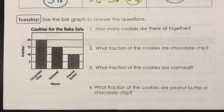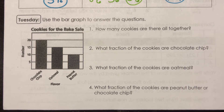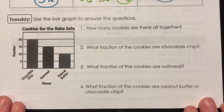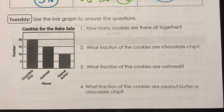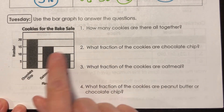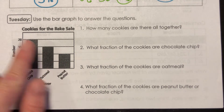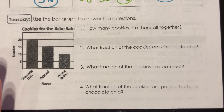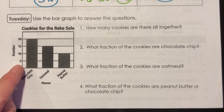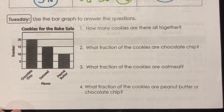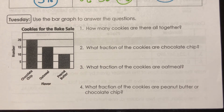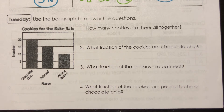Hey fifth graders, it's time to check your bell work for Tuesday January 5th. Hopefully you already have this done and you are watching this to check it — that would be the best way to do this. It asks you to use the bar graph right here to answer the questions. This one's about cookies for the bake sale. I always try to take a look first at what we're dealing with — the number scale is counting by fives, not by ones, and we have three different cookie flavors: chocolate chip, oatmeal, and peanut butter.